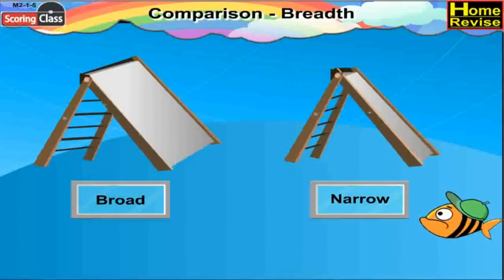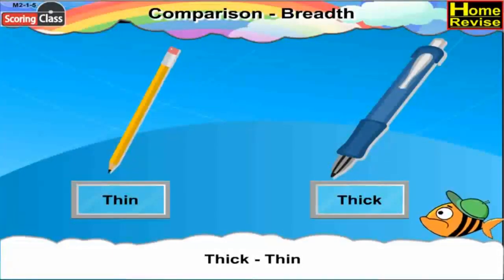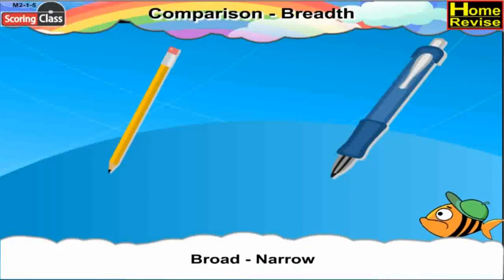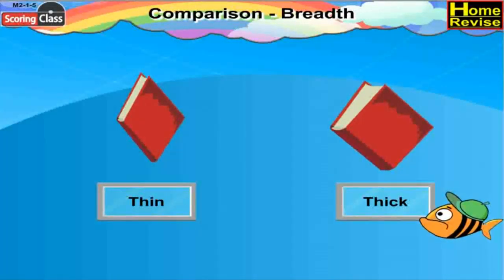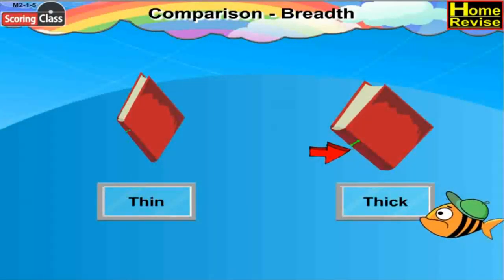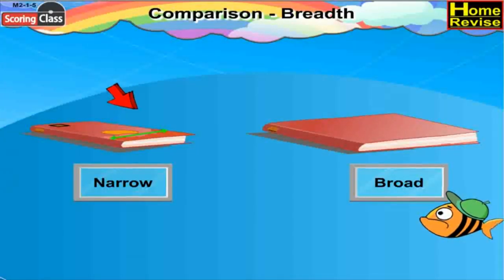There are a lot of objects which are broad, narrow, thick, or thin. Let us try and make a difference between thick and thin, and broad and narrow. Here you'll find the edges of books. If you notice the edge of the first book, it is thin, and the edge of the second book is thick. Now here are the books again — if you notice, the first book is narrow and the second book is broad.